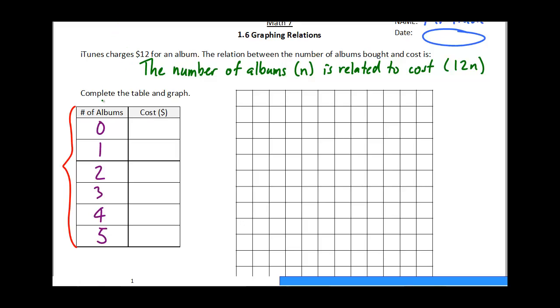And then if our number of albums is n and our cost is 12n, as is our relation, then we can calculate the cost for each set. So for 0 albums, obviously that would cost $0. 1 album would cost $12. 2 albums would cost $24. 3 albums would cost $36. 4 albums would cost $48, and 5 albums would cost $60.